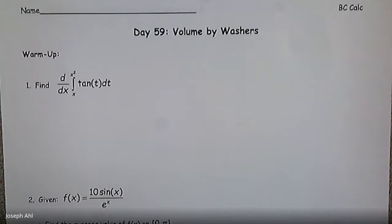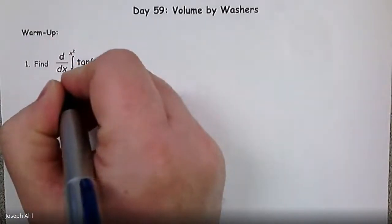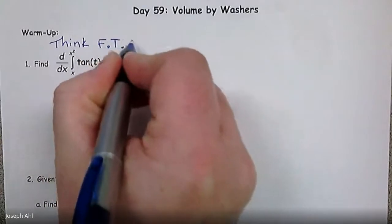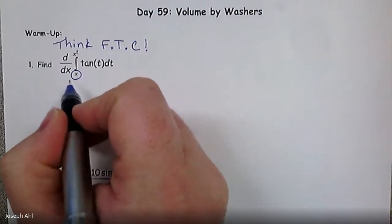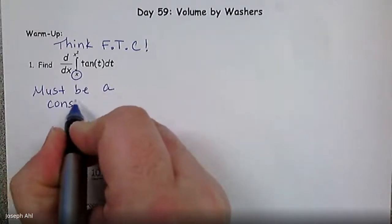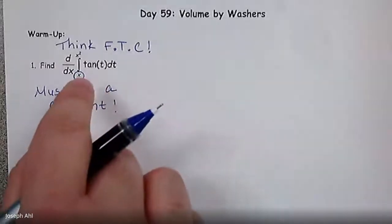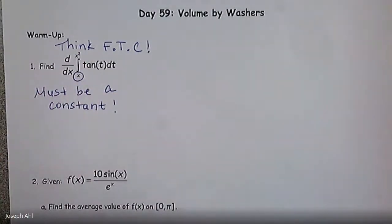So before we get into that, there are some warm-up questions on the first page, and I'm going to give you a hint for number one. When you see the derivative of this accumulation function, we're thinking fundamental theorem — FTC. However, when we do fundamental theorem, the lower bound has to be a constant. So my hint for number one is you're going to have to break this up into two integrals and introduce some sort of constant so that we can apply fundamental theorem.